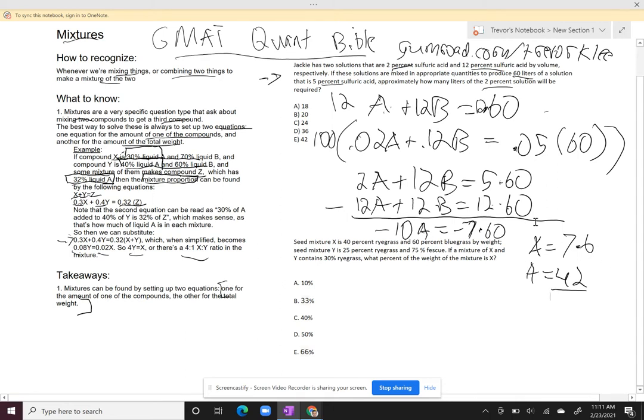All right, let's try another one. So this one, seed mixture X is 40% ryegrass and 60% bluegrass by weight. Seed mixture Y is 25% ryegrass, 75% fescue. Mixture of X and Y is 30% ryegrass. What percent of the weight of the mixture is X? Well, again, pretty straightforward.